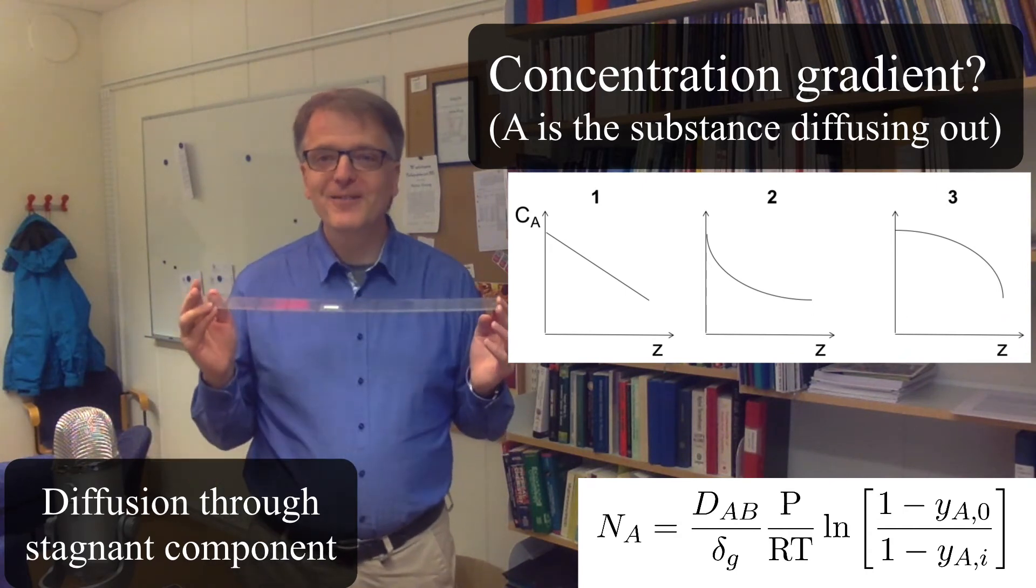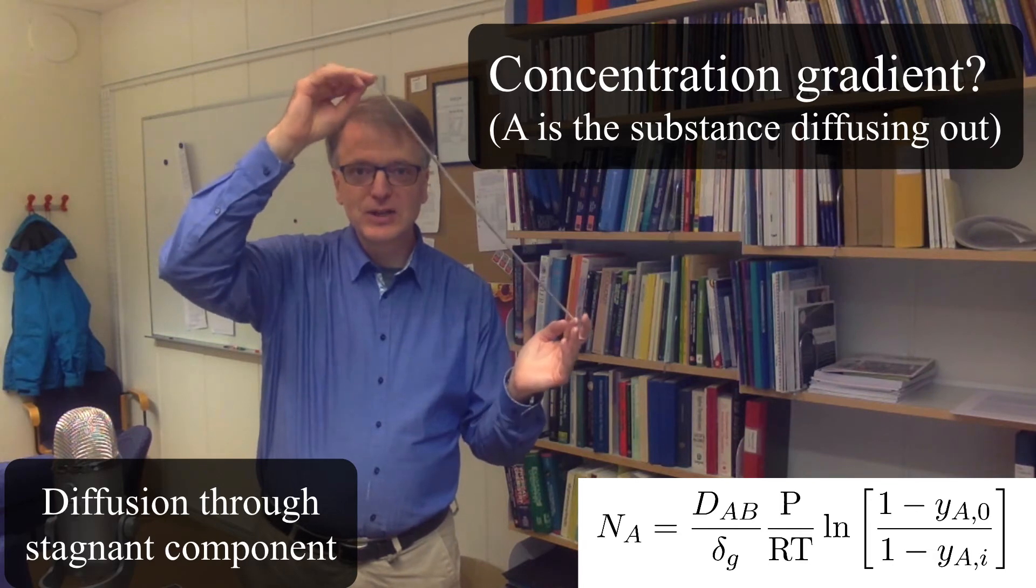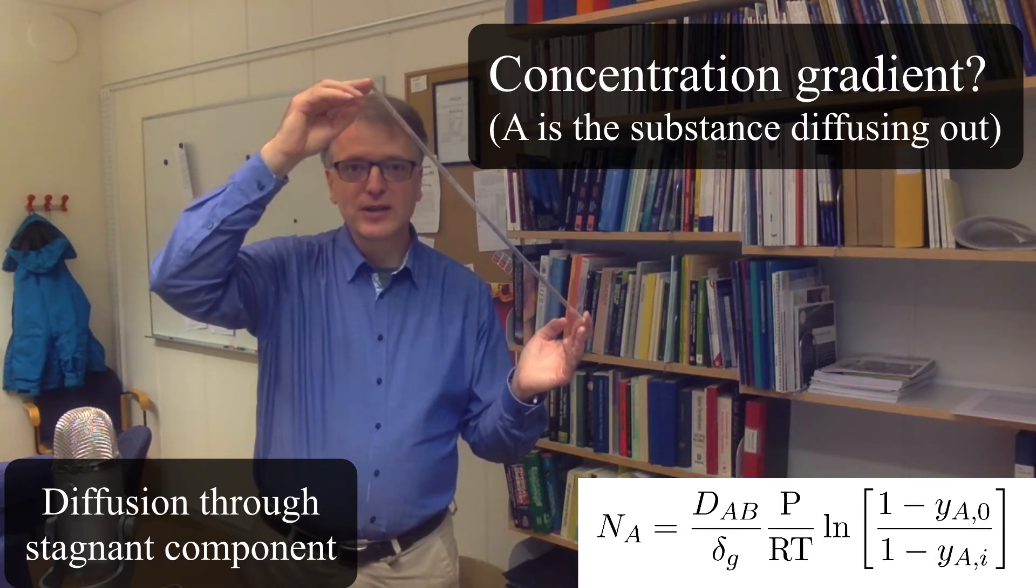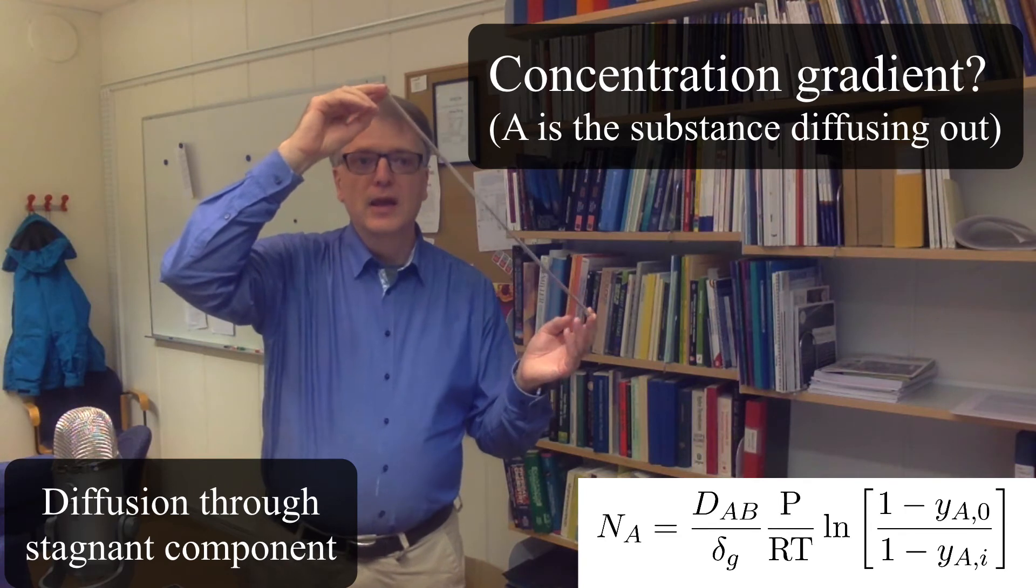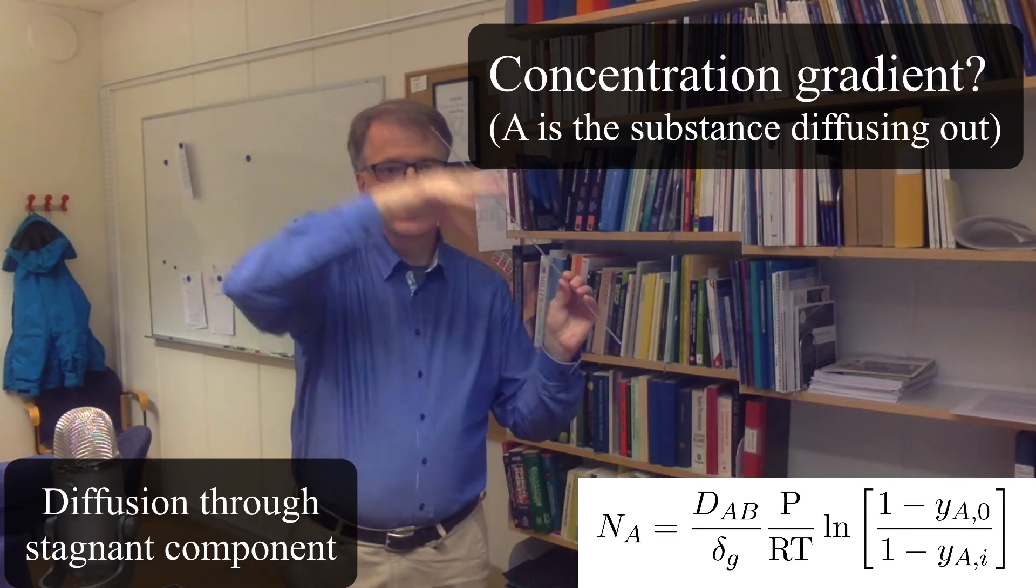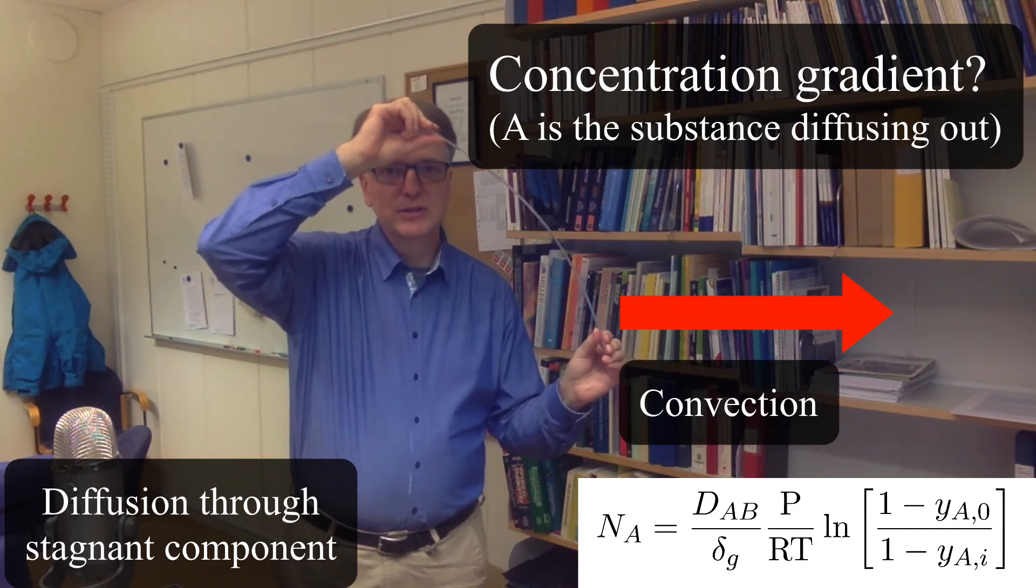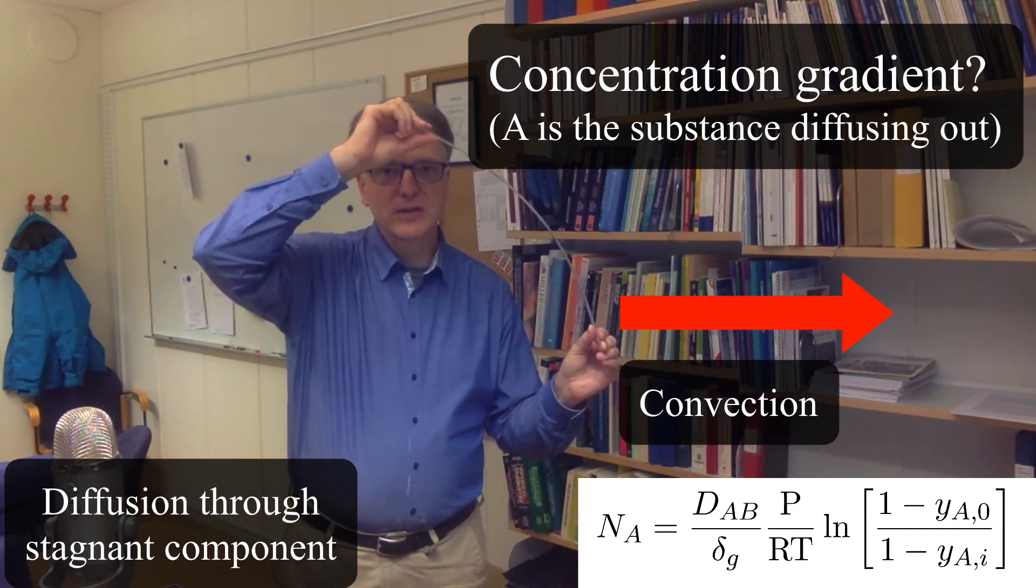Now if we have no convection, we said before that we get a straight concentration gradient, so something linear. What happens if you have convection? So if you have convection in this direction, the convection will push the concentration gradient.